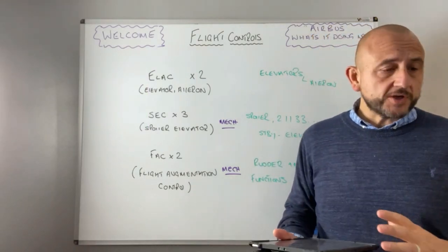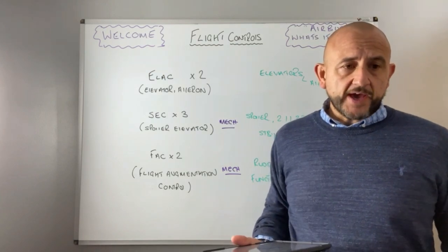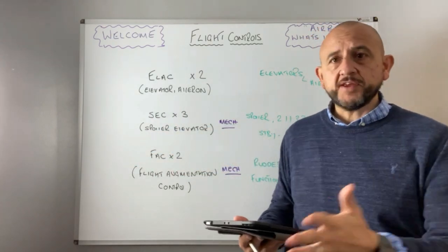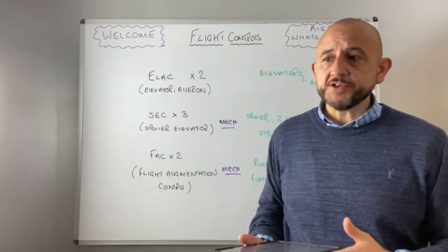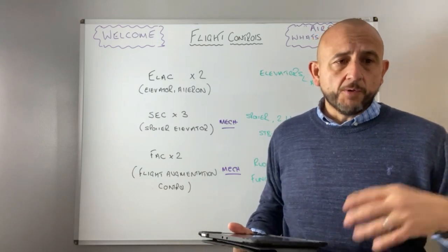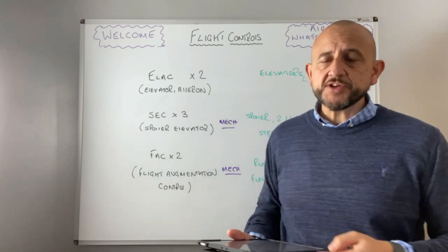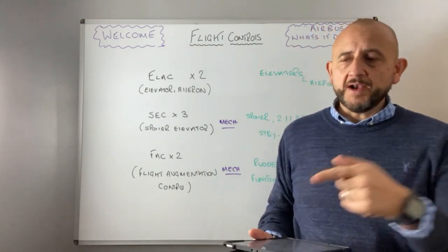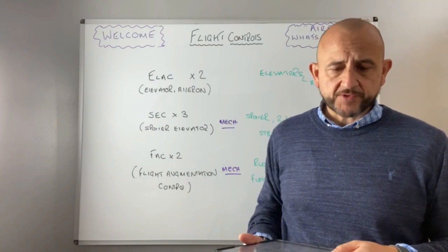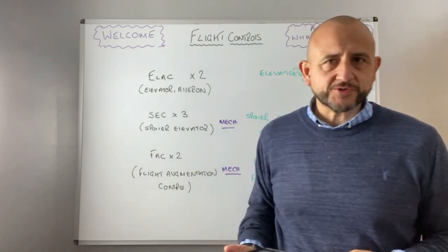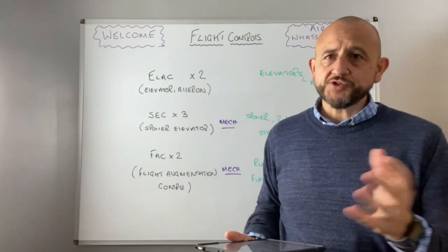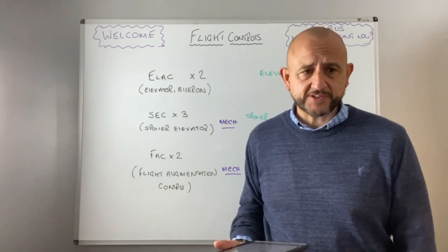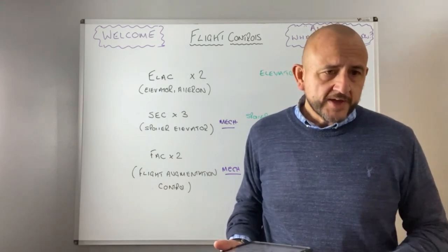This is a fly-by-wire aircraft. Any inputs we put into the flight deck go through a transducer that sends electrical signals via fibre optic cables, through a flight control computer. It checks the inputs the pilot has put in — whether for alpha or load control — then sends information to the control surface about how much to move. There's a computer in between that decides whether the pilot can have the input requested. That's basically the Airbus flight control system in very simple terms.